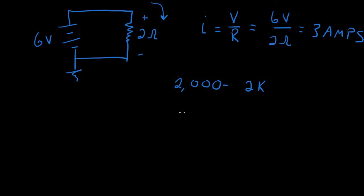So in this case, if we had a 2K ohm resistance, our current would be six volts over 2K or six volts over 2,000, which would be three thousandths of an amp or three milliamps.